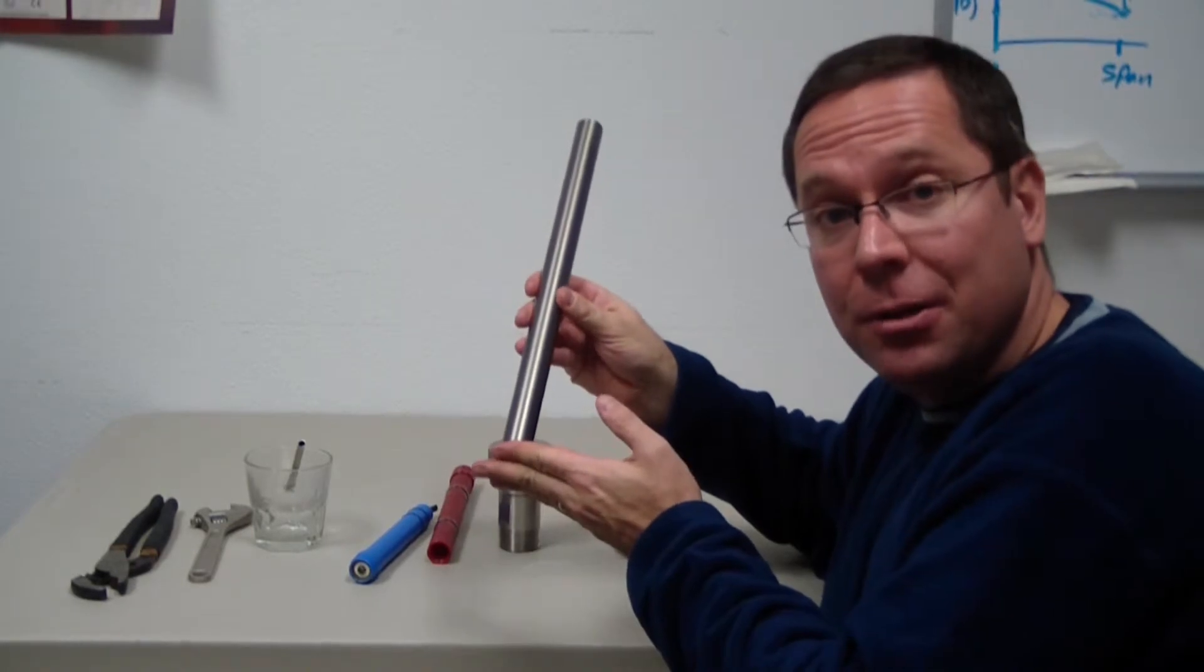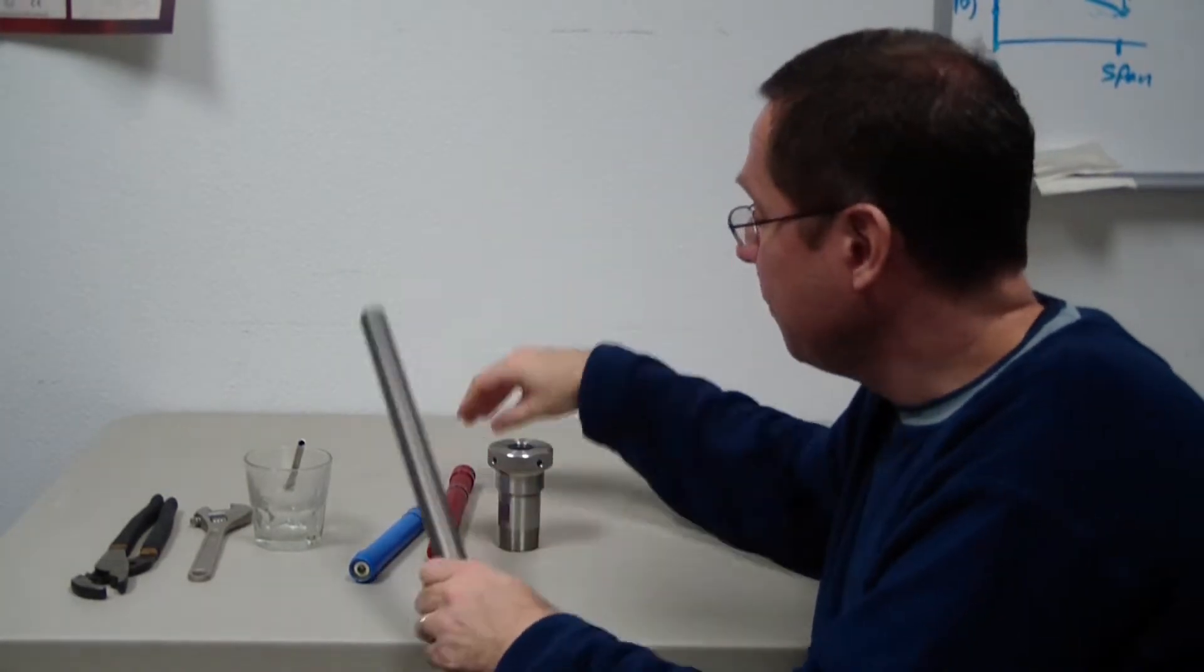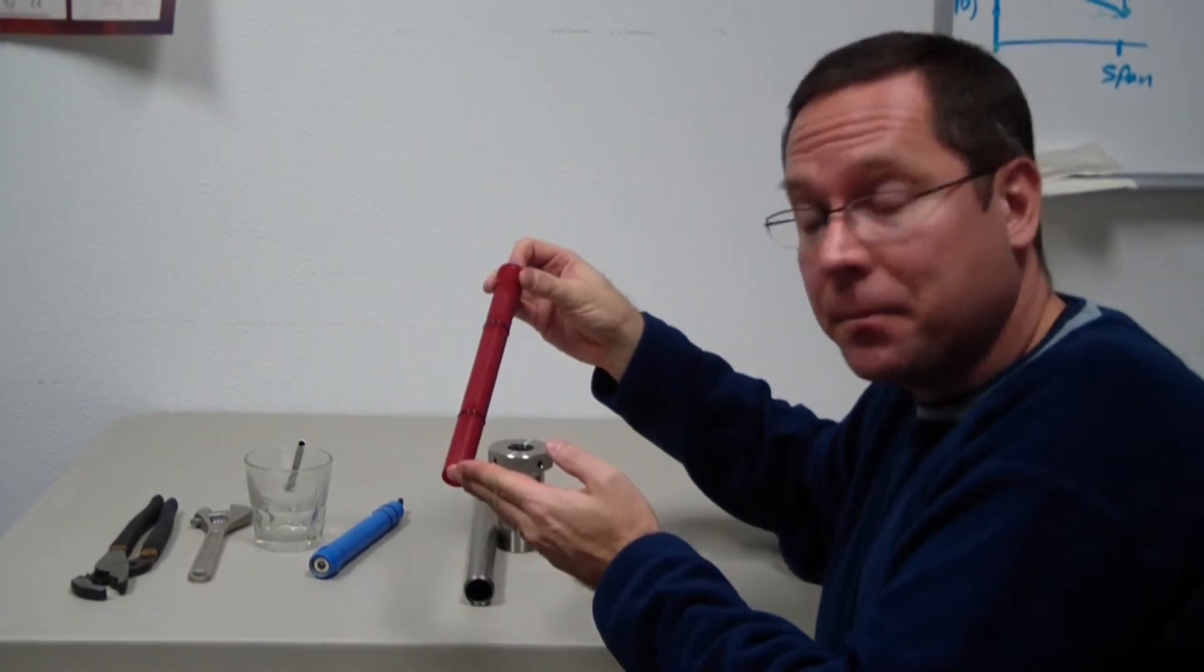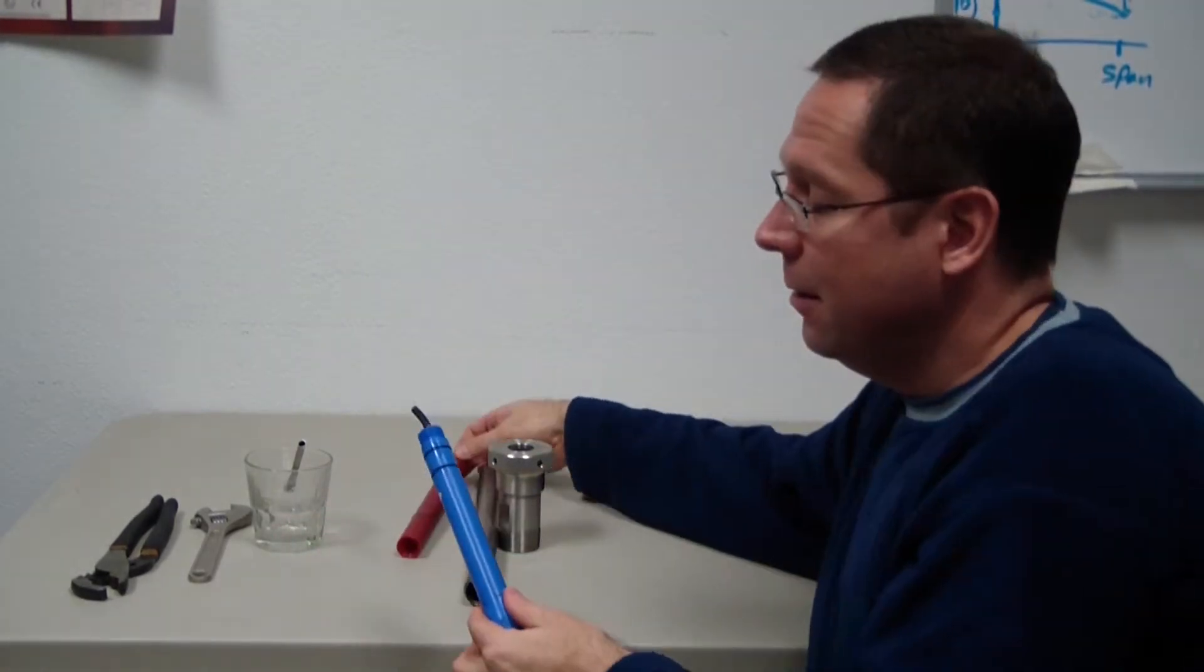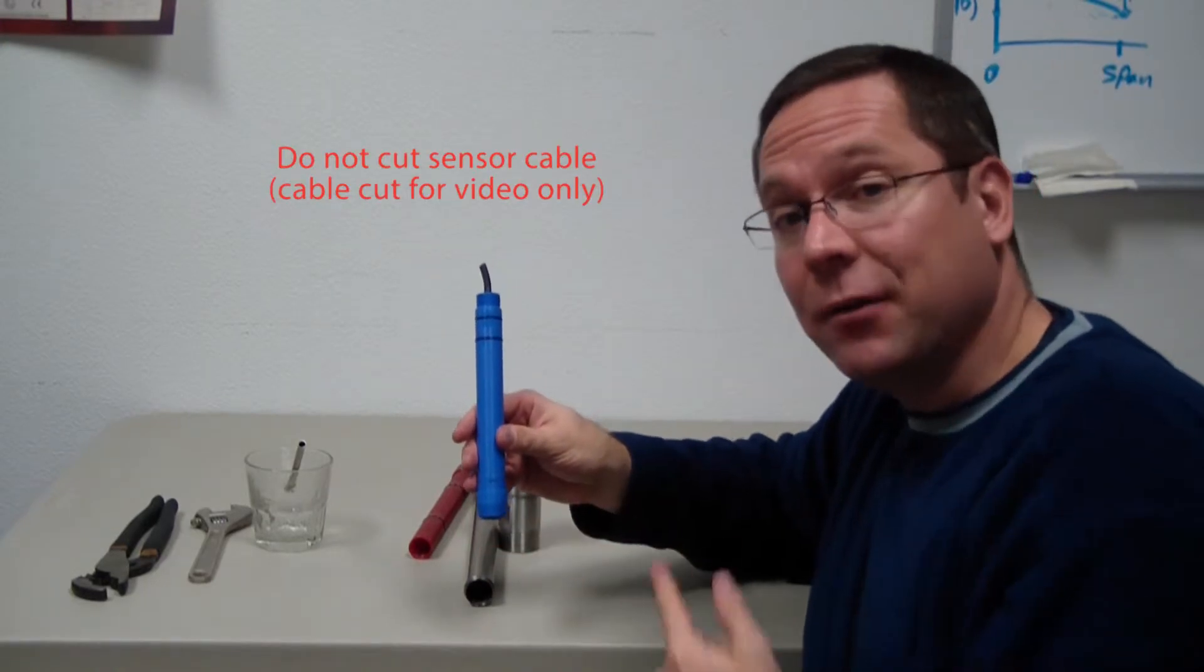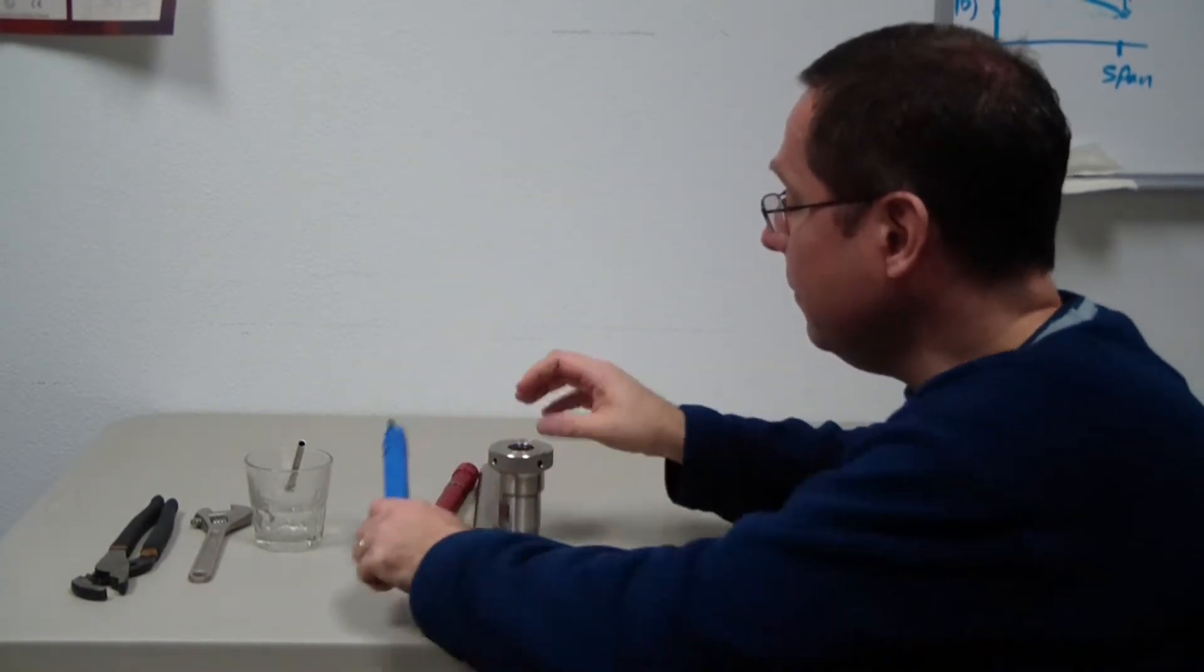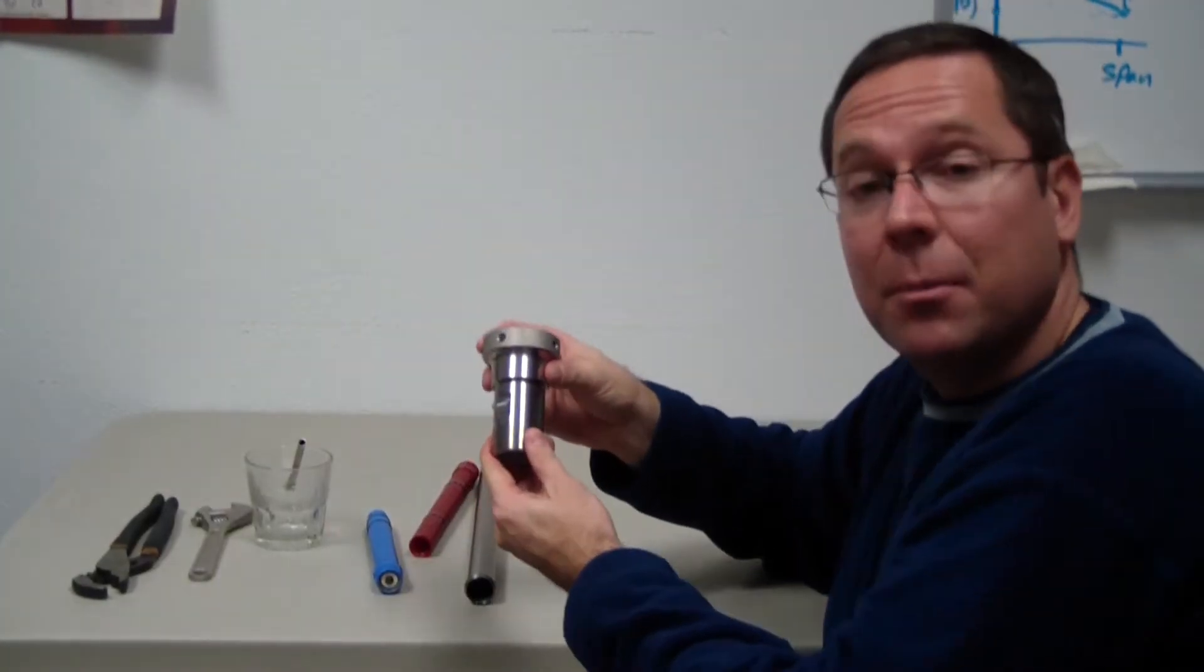I also have the metallic sheath that the sensor fits into, the back piece assembly, the pH sensor, and in this case I've cut the cable off on the sensor to make things go a little quicker, and a compression fitting.